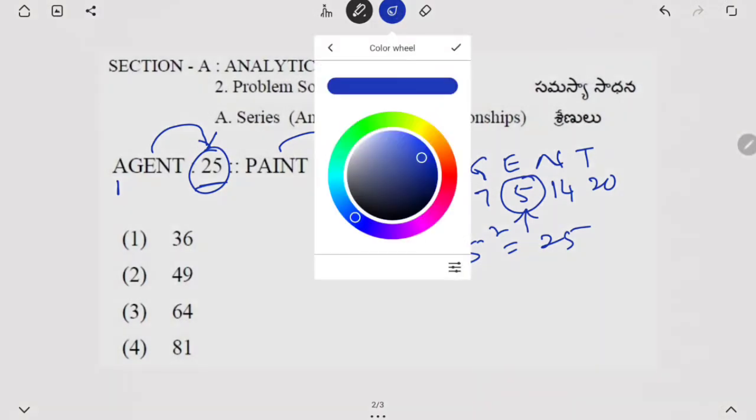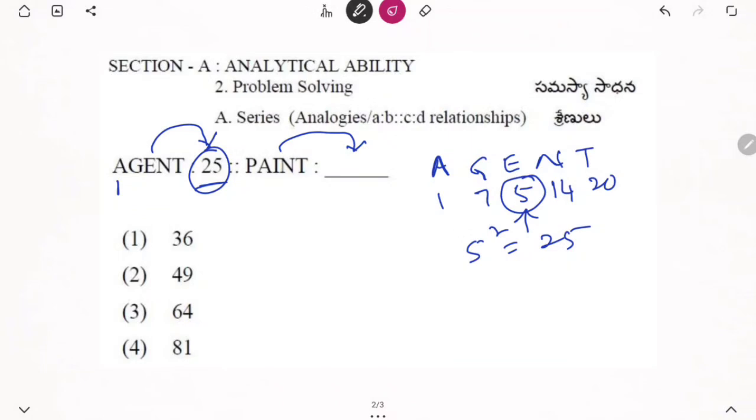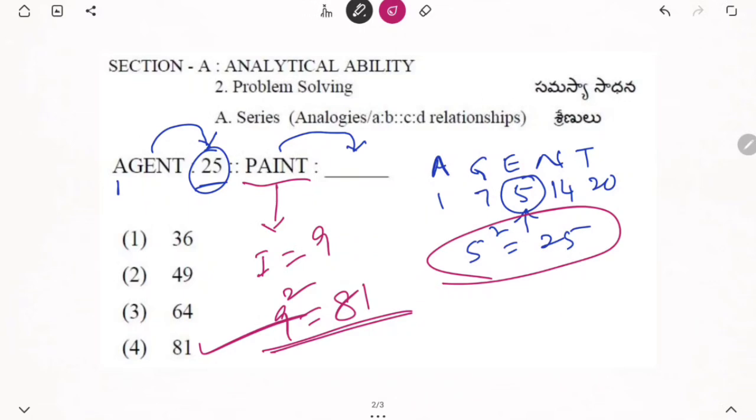Similarly we try our logic for paint. For paint also we write alphabetically. We need only the middle one here. If you want the same logic the middle one is what we are doing. Middle one here is I. What is for I? It is 9. Alphabetical I is in the sequence number 9. What about the 9 square? Here we have done the 5 square. Now we do 9 square. 9 square means 81. So by using the same logic, here we are having 81. So answer should be 81.